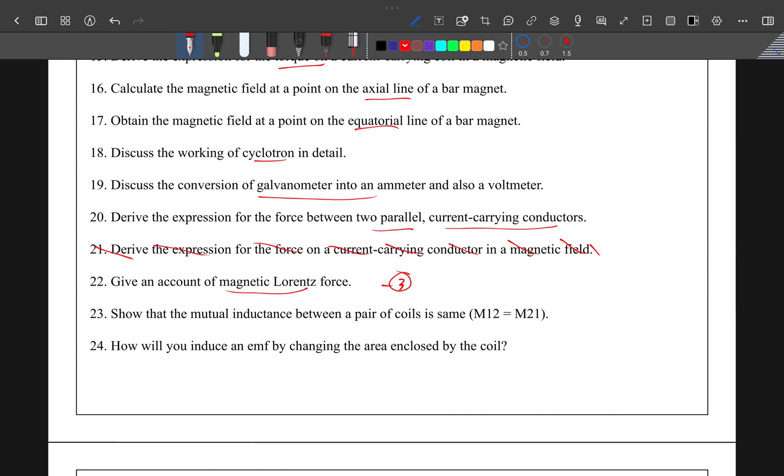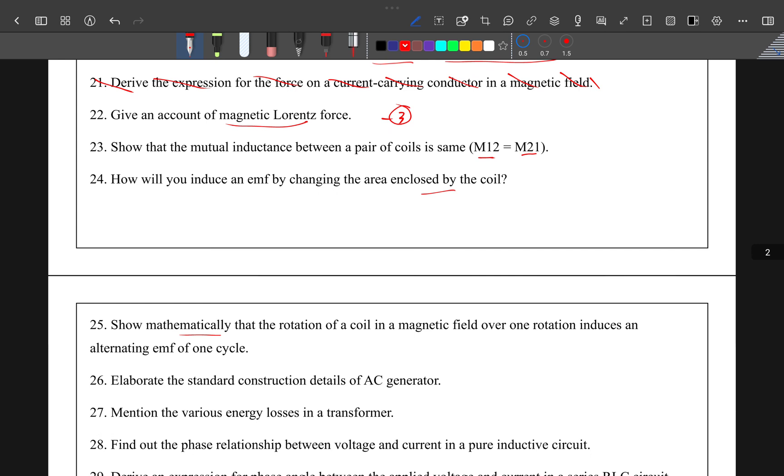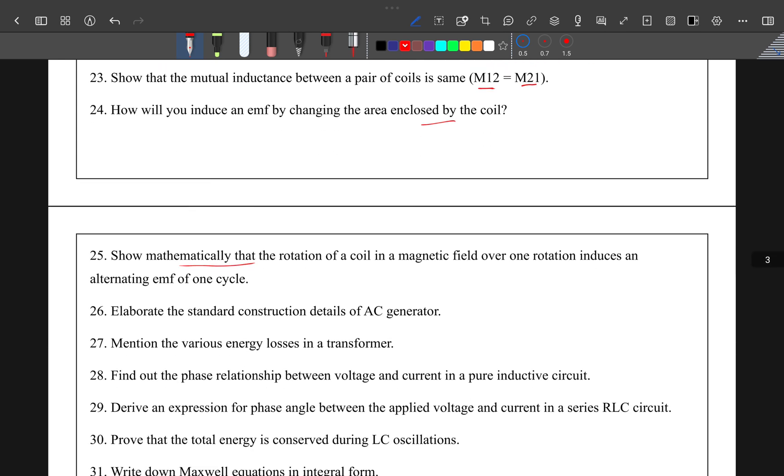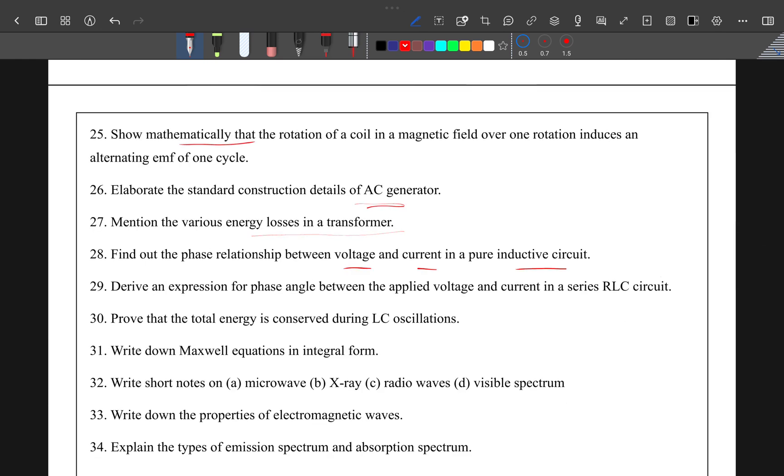Show the mutual inductance of a pair of coils: M12 equals M21. How to induce an EMF by changing the area enclosed by a coil (show mathematically). Elaborate the construction of AC generator, various losses in transformer, relationship between voltage and current in pure inductive circuit, phase angle between applied voltage and current in RLC circuit, and prove that energy is conserved in LC oscillations. This is the fourth lesson.